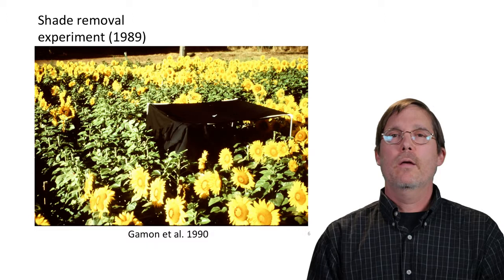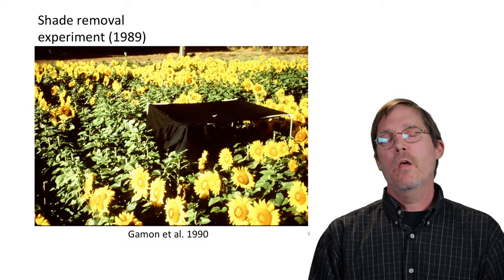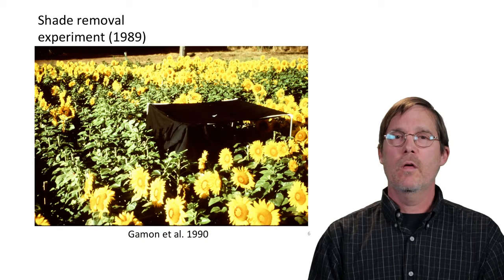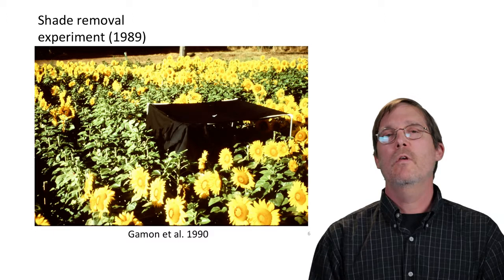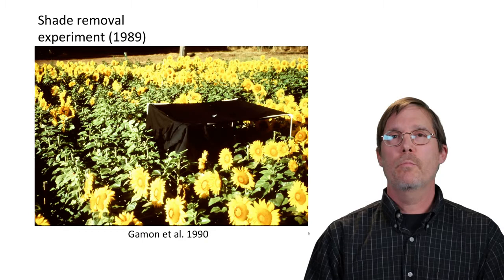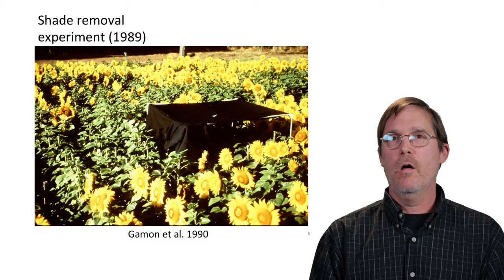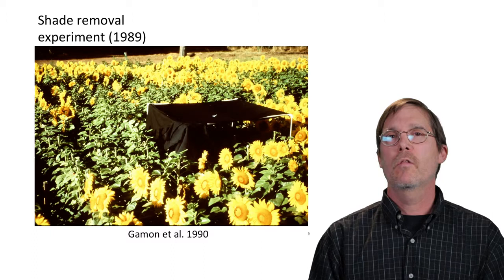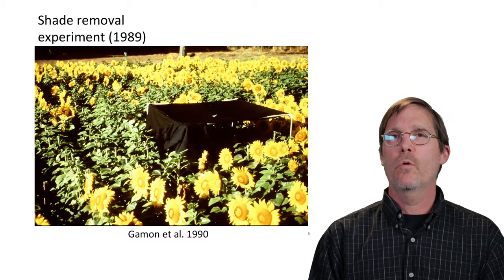The story of PRI began with a shade-removal experiment with sunflower. It was known that the xanthophyll cycle existed, and since these are pigments it seemed likely that if you exposed a canopy to highlight abruptly, you should be able to see a change in the reflectance spectrum. The idea was to shade the canopy with a black cloth and then suddenly pull it out, abruptly exposing the canopy to full sunlight at midday — while monitoring reflectance from above with a spectrometer.